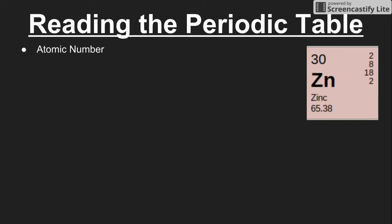The first thing to talk about is the atomic number. Something to keep in mind is that the atomic number is actually the thing that the entire periodic table is organized by — it's organized by ascending atomic number. If we're looking at our particular section of the periodic table for zinc, the atomic number for zinc is 30. So the number written above the element symbol is the atomic number.